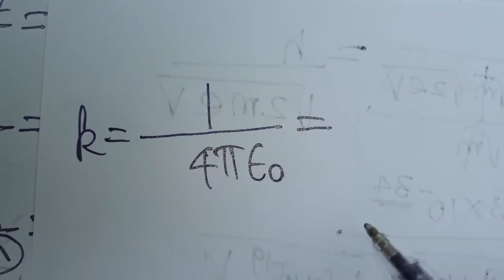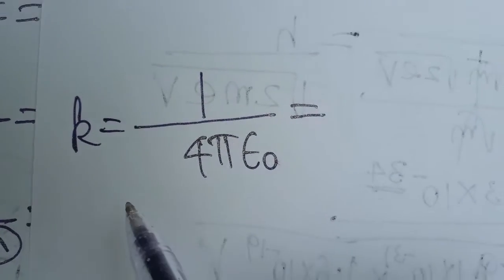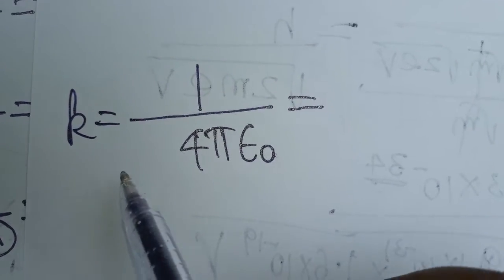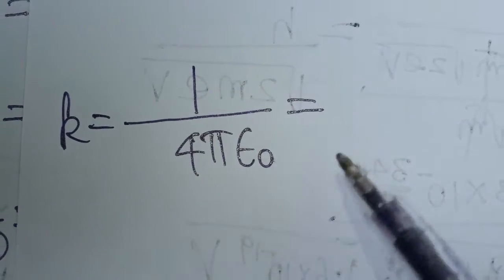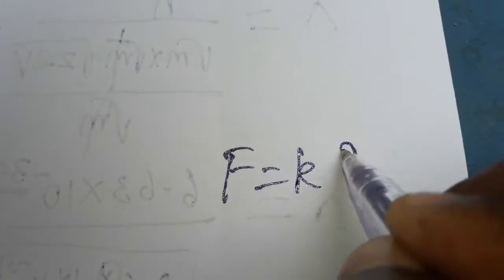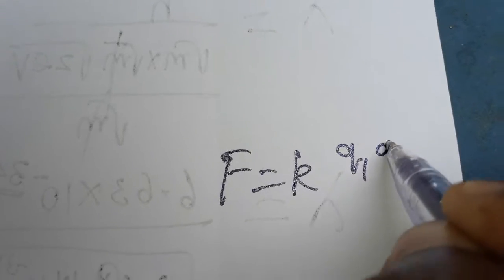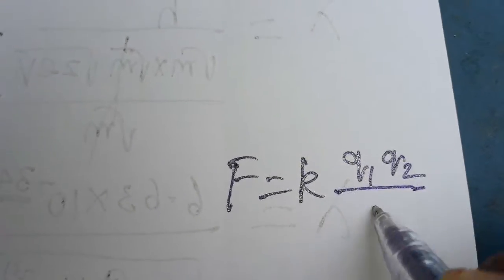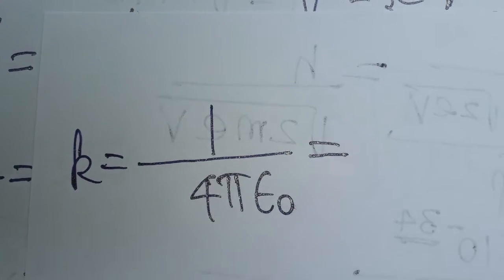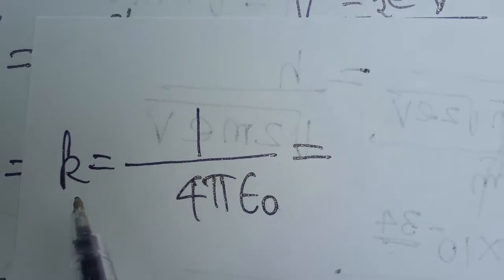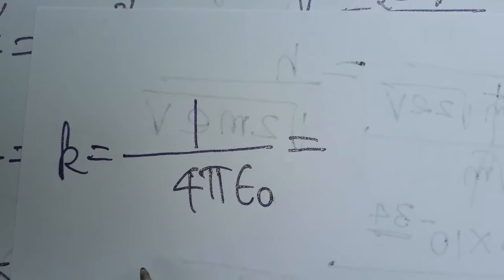Today we are going to learn what is 1 divided by 4 pi epsilon naught. k is a constant. We are going to relate it with 1 divided by 4 pi epsilon naught in Coulomb's law: F is equal to k times q1 q2 divided by r squared. Today I am going to teach you the SI unit of this k.